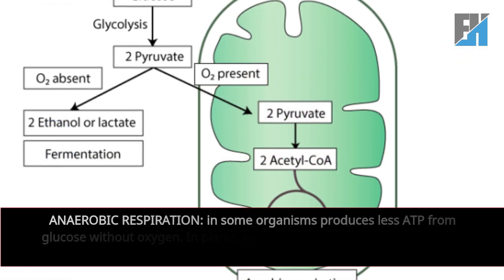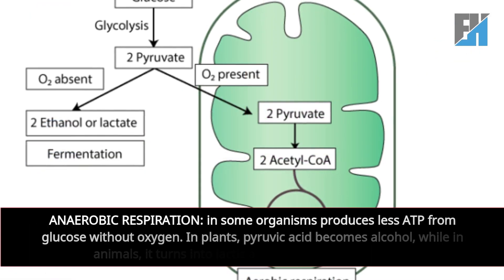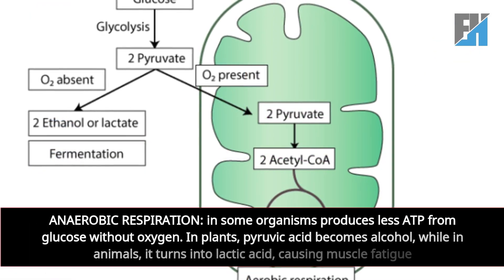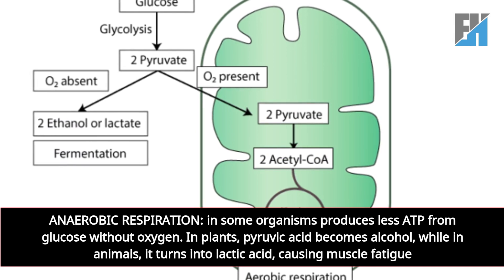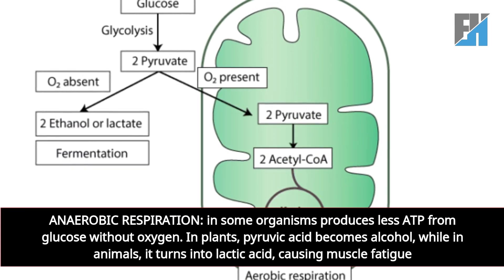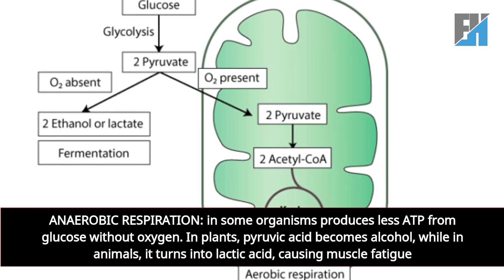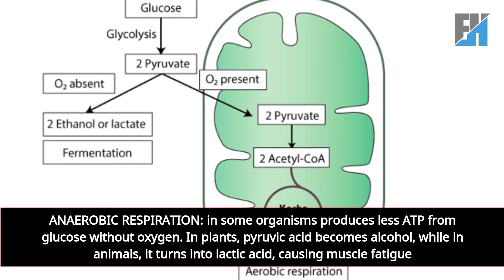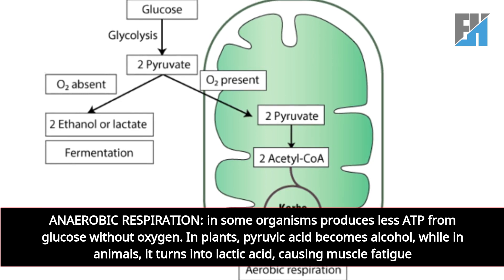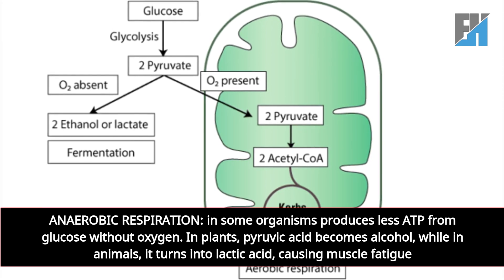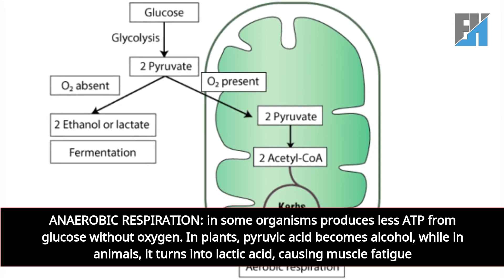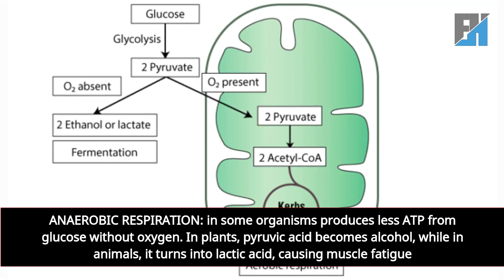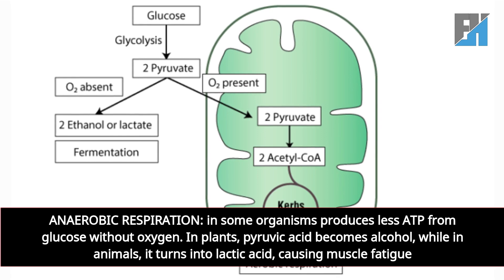Anaerobic respiration, in some organisms, produces less ATP from glucose without oxygen. In plants, pyruvic acid becomes alcohol, while in animals, it turns into lactic acid, causing muscle fatigue.